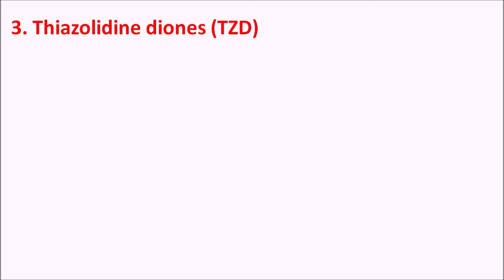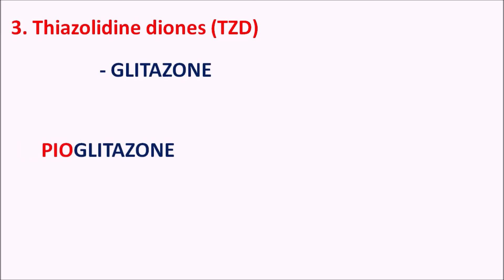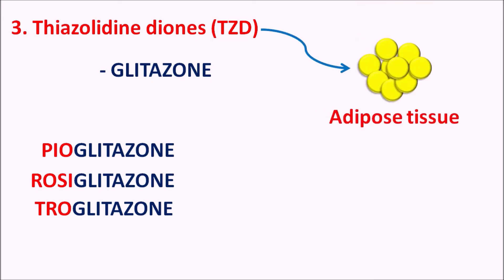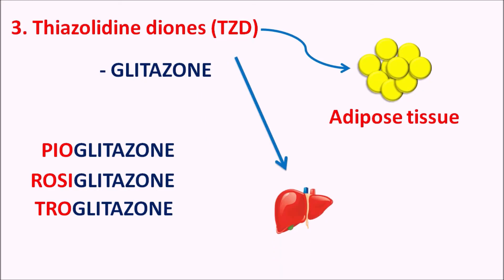Third are the thiazolidinediones, with the suffix GLITAZONE. Drugs include pioglitazone, rosiglitazone, and troglitazone. These drugs act on adipose tissue, promoting the activity of PPAR-gamma receptors (peroxisome proliferator-activated receptor gamma), which are nuclear receptors. By acting on these receptors they promote gene transcription and protein synthesis, producing proteins that control glucose levels. They increase glucose uptake into adipose tissue, reduce hepatic glucose production in the liver, and increase insulin sensitivity — but do not directly increase insulin secretion from pancreatic cells.